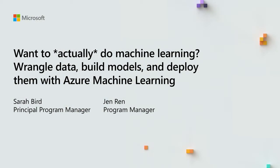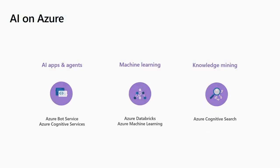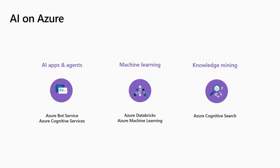I'm here with my co-speaker Jen Ren and we're going to talk about how we're going to wrangle data, build models, and deploy them using Azure Machine Learning. To place this talk, there are a lot of different AI talks throughout Build. We have three major areas for our artificial intelligence services: AI apps and agents, machine learning tools such as Databricks and Azure Machine Learning, and knowledge mining with Azure Cognitive Search.